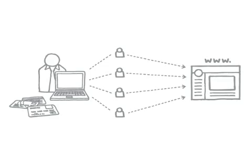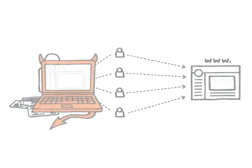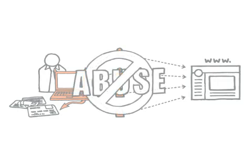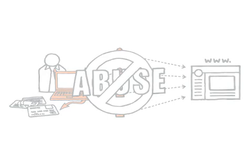End users connect to an online site with an identity and a device. The end user provides any identity information you require, and they can tell you anything they want. iOvation can tell you about the device component, and understanding the reputation of the computer is an incredibly powerful tool. We use device reputation to expose cybercriminals and abusers, preventing them from hiding behind multiple identities to repeatedly abuse your business.